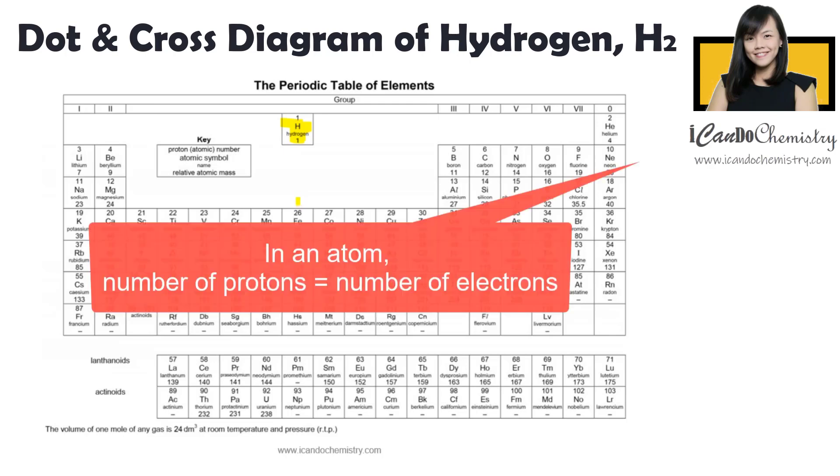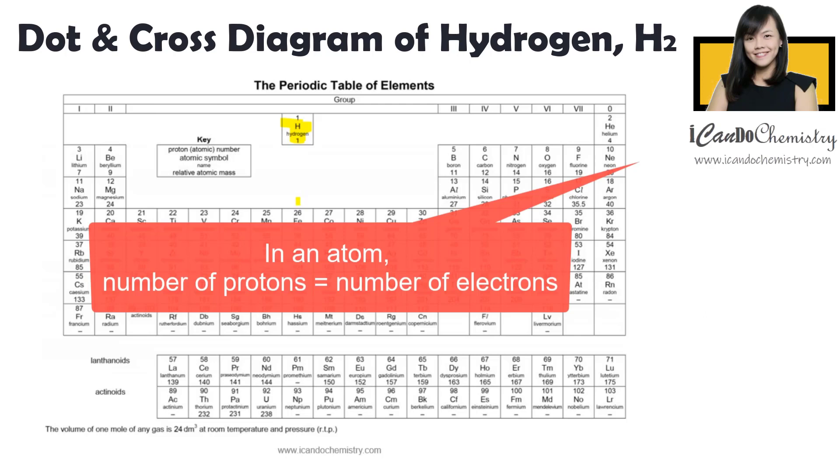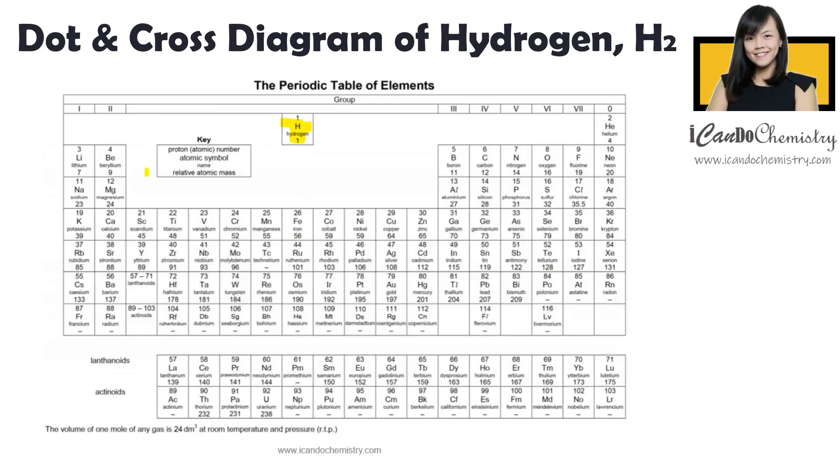Now back to atomic structure, we know that in an atom, the number of protons and electrons must be the same. Now in the periodic table that you have in the exam, you can just refer to the key to know what each of the numbers represent. The top number actually is the proton number, or we can say it's an atomic number, which means it is the number of protons.